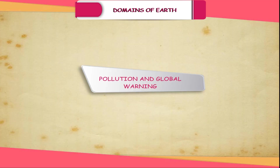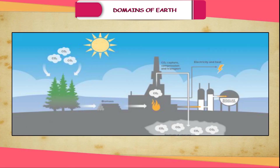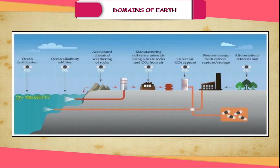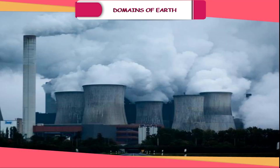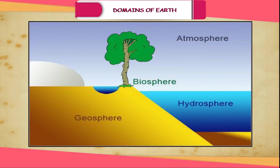Emission from industries, thermal power plants and vehicles pollute the air. Carbon dioxide is an important constituent of the air, but an increase in the amount of carbon dioxide leads to an increase in global temperature, which is called global warming. There is a need to limit the use of Earth's resources to balance nature between the domains of the lithosphere, the atmosphere and the hydrosphere.